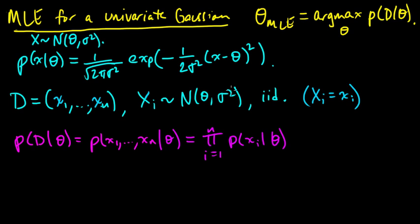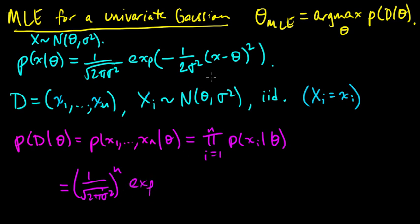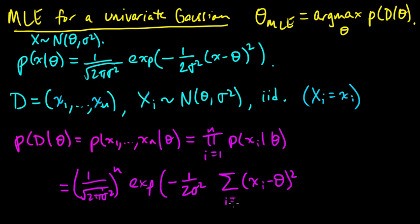We can apply this formula since they all have the same density. Writing out what that product is: we get the prefactor to the nth power, and then the product of exponentials becomes the exponential of the sum. So this is exp of minus 1 over 2 sigma squared times the sum over (xi minus theta) squared, as i goes from 1 to n.